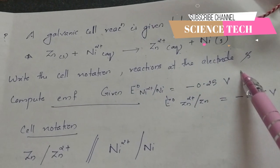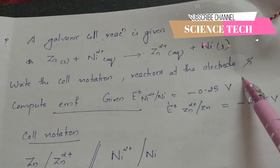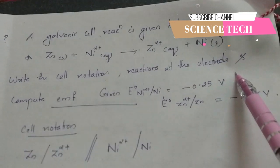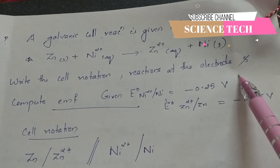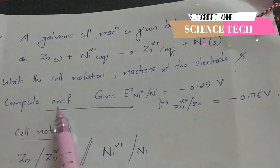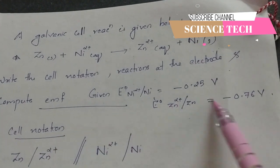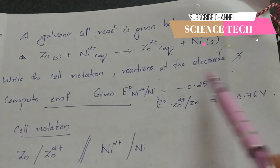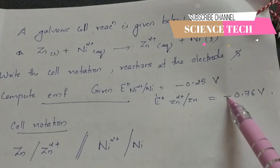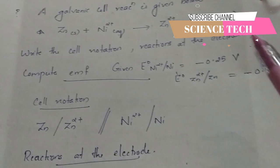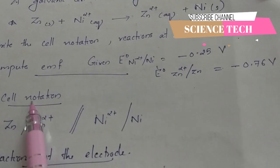Reactions of electrode — reactions of an anode. Compute the EMF. That cell EMF, we will write it in the cell.